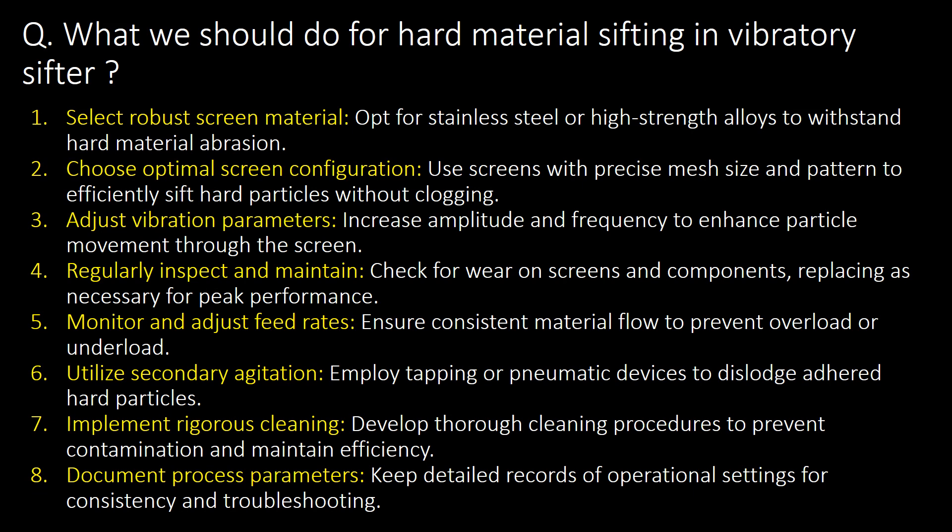What should we do for hard material shifting in a vibratory shifter? We can follow these eight steps: first, select robust screen material; second, choose optimal screen configuration; third, adjust vibration parameters; fourth, regularly inspect and maintain; fifth, monitor and adjust feed rates; sixth, utilize secondary agitation; seventh, implement rigorous cleaning; eighth, document process parameters.